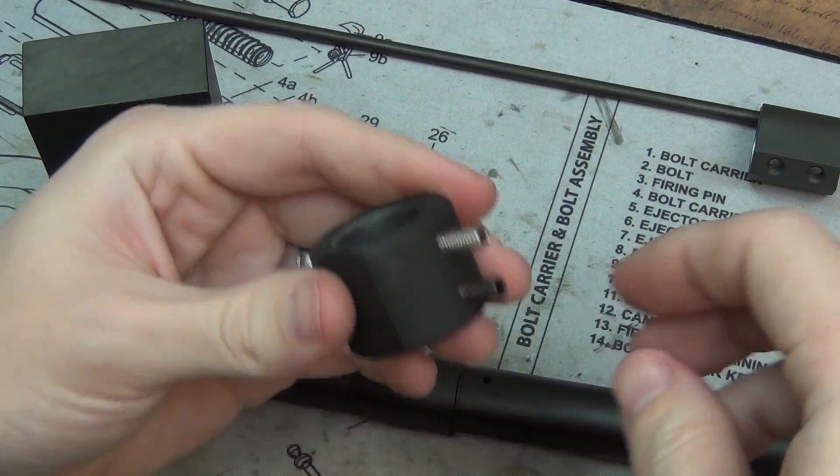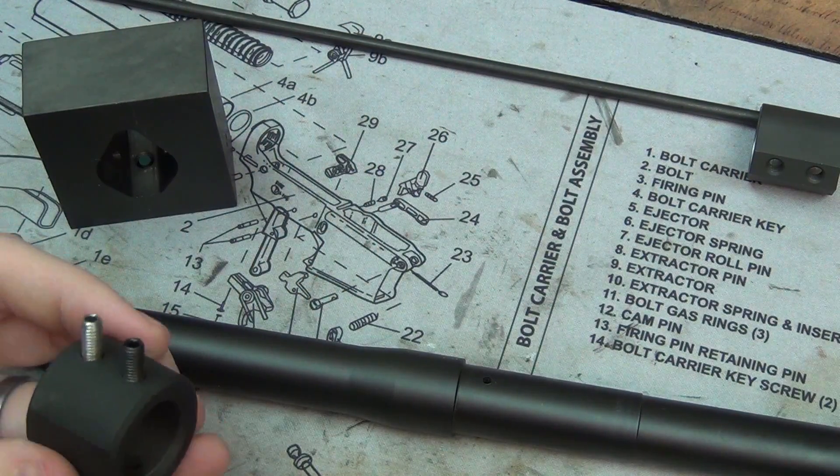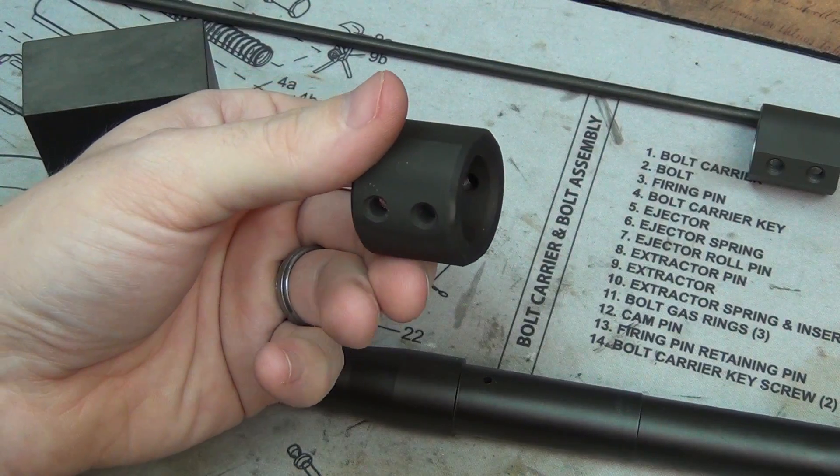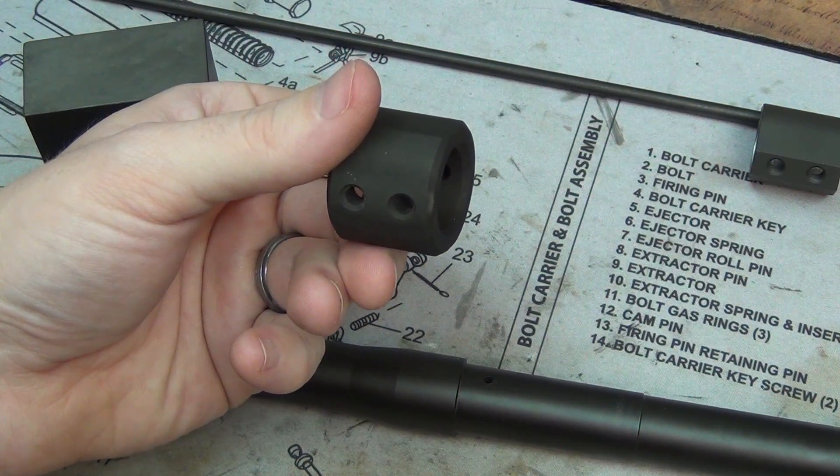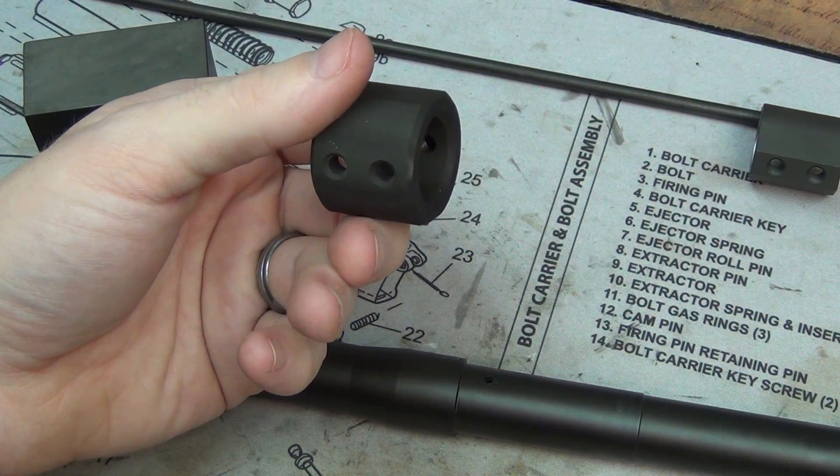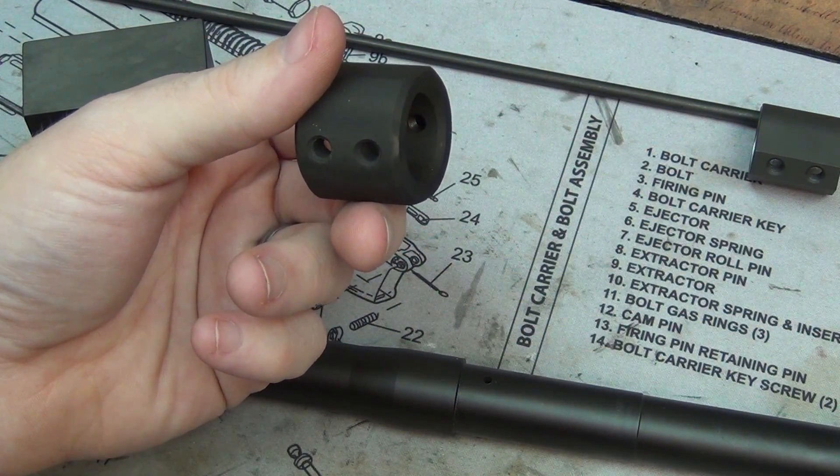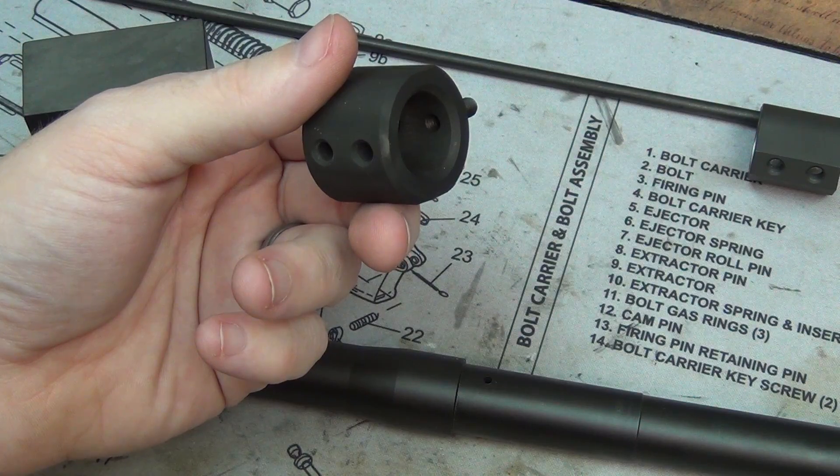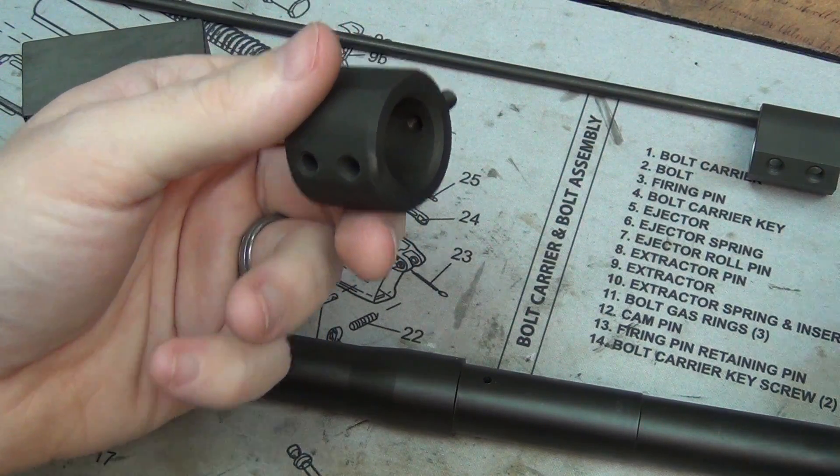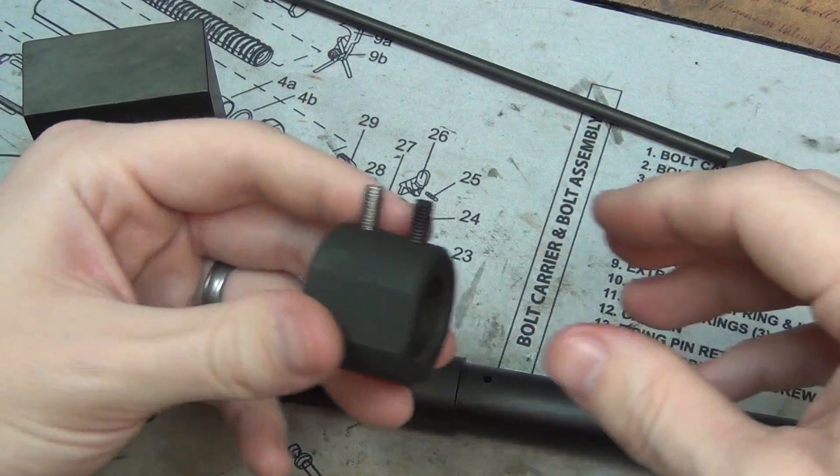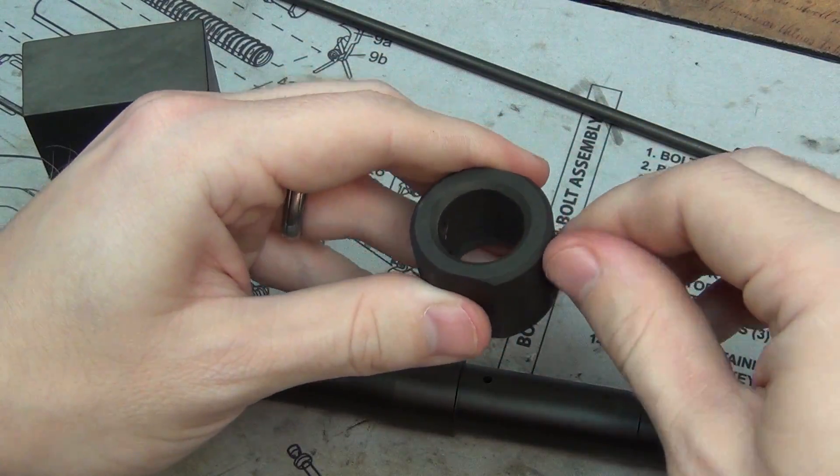What this does is line up everything completely correct and then allows you to do dimples. This fits any gas block that is 0.460 center to center, including Rainier, BCM, Voltor, LaRue, and Fortis. You can use this for any other gas block because that first hole is going to be directly in line with the gas port.